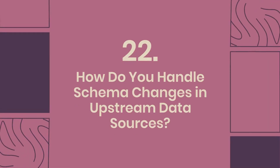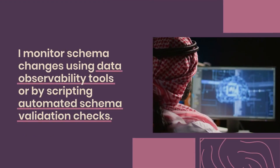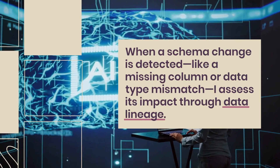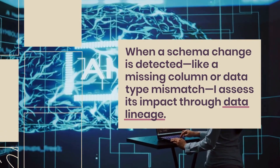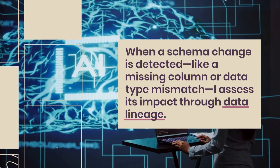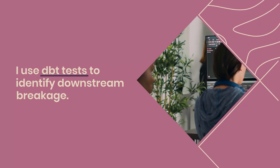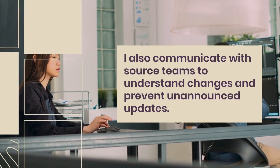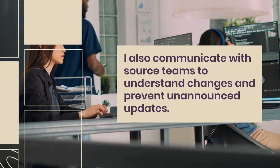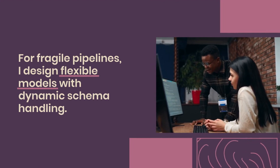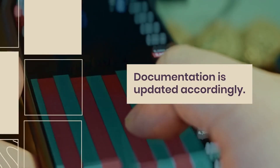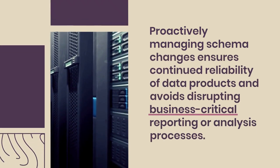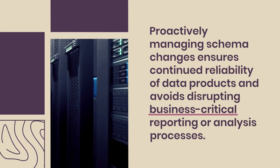Question 22: How do you handle schema changes in upstream data sources? I monitor schema changes using data observability tools or by scripting automated schema validation checks. When a schema change is detected, like a missing column or data type mismatch, I assess its impact through data lineage. I use DBT tests to identify downstream breakage. Version control enables rollback if needed. I also communicate with source teams to understand changes and prevent unannounced updates. For fragile pipelines, I design flexible models with dynamic schema handling. Documentation is updated accordingly. Proactively managing schema changes ensures continued reliability of data products and avoids disrupting business-critical reporting or analysis processes.